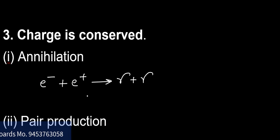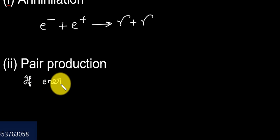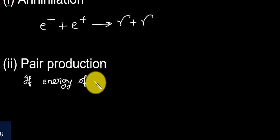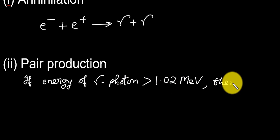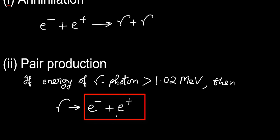Second example is pair production. If a gamma photon of energy more than 1.02 million electron volt interacts with nucleus, it produces a pair of electron and positron. Gamma photon converts to e minus e plus. Here net charge on left side of this equation is 0 and net charge on right side of the equation is also 0.